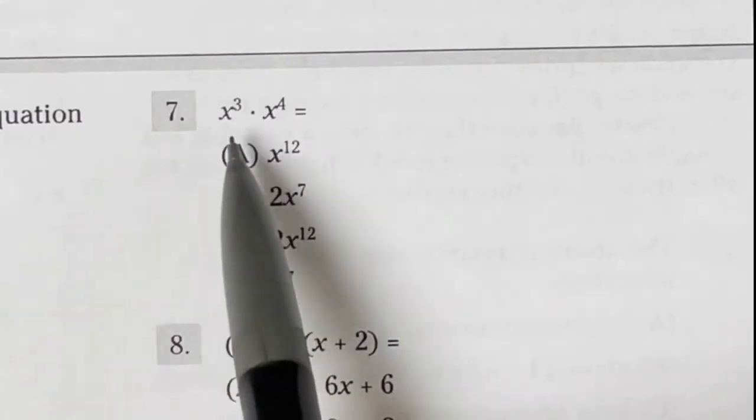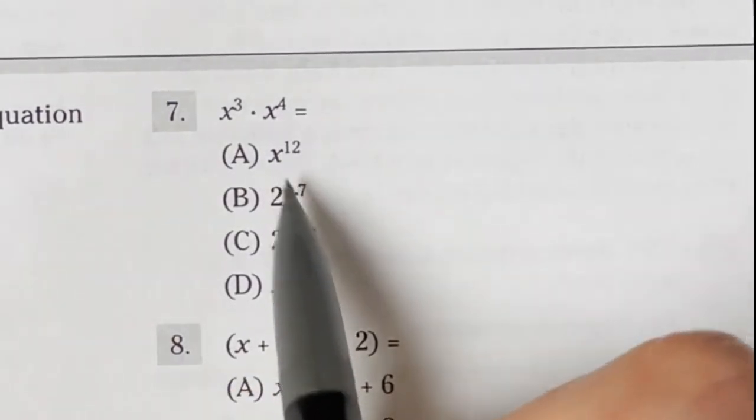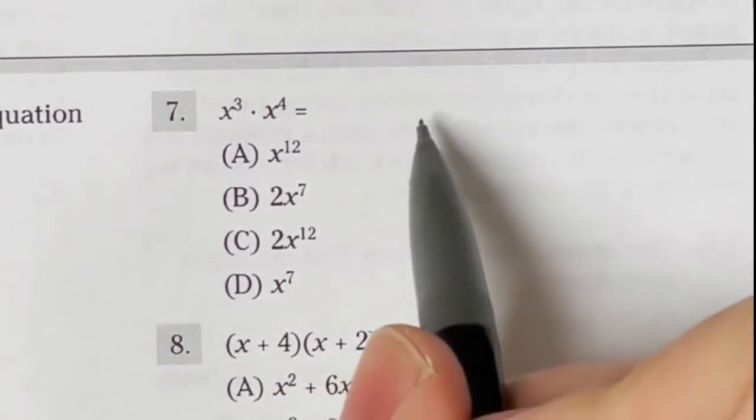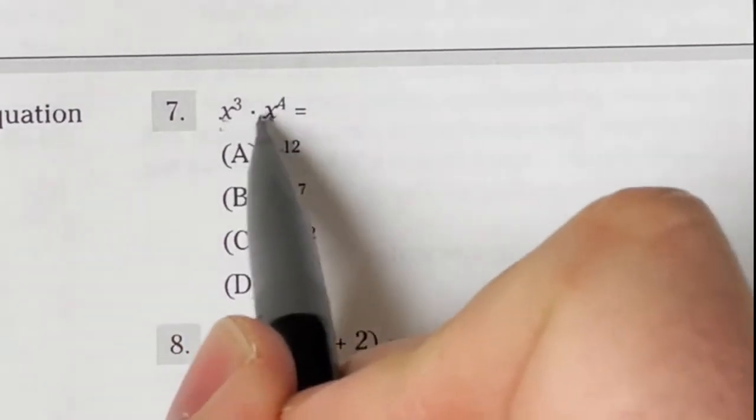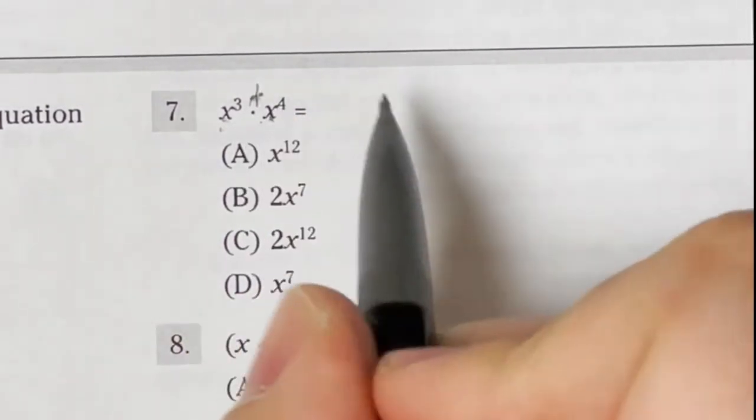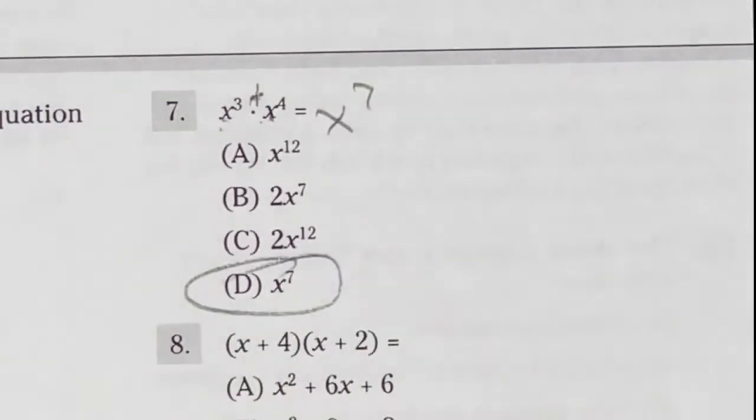Number 7 on the ASVAB says x cubed times x to the fourth power. What is this? This is an exponent rule question and it turns out that if you have the same base, in this case x, and you are multiplying together, you are able to just add the exponents together, meaning that this answer is just x to the seventh, which is going to be answer D.